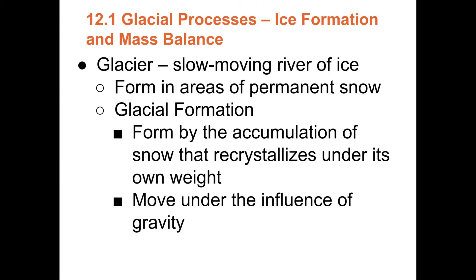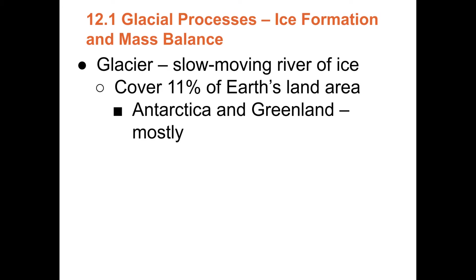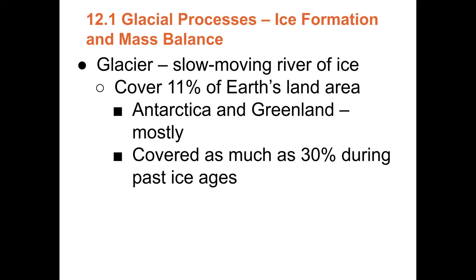Once ice is about 300 feet (100 meters) thick, it flows downhill under gravity. Glaciers cover about 11% of Earth's land area, with Antarctica and Greenland holding most of Earth's ice. During past glacial maximums, as much as 30% of Earth was covered with ice, and sea levels globally were about 360 feet (120 meters) lower because so much water was frozen as ice on land.